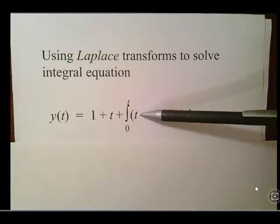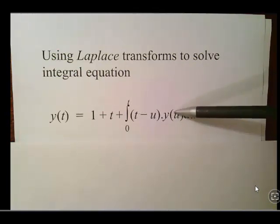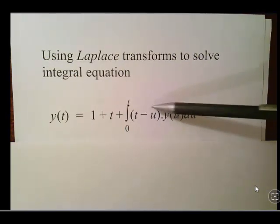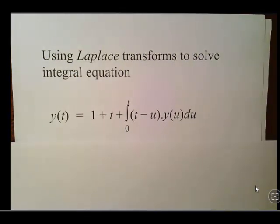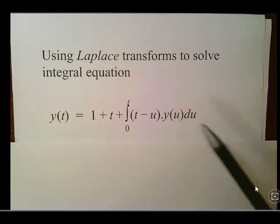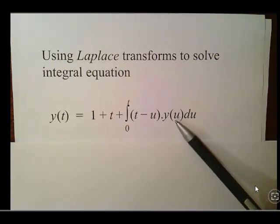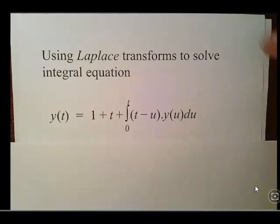And what you should do there is recognize that this is the convolution of two components. T, just T itself. The function F of T is T and G of T is Y of T. So essentially what we're going to do here is... By the way, just for a couple of these, you should expect a function of Y here. It just makes the problem more interesting.